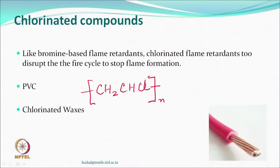Chlorine compounds have also been used as flame retardants. Electrical wire coatings are commonly made of PVC — a chlorine-based hydrocarbon polymer — which acts by the same vapor phase mechanism: chlorine forms HCl, and HCl participates in free radical quenching. Other types include chlorinated waxes. Whenever chlorine or bromine are available, they perform quenching of free radicals during combustion.